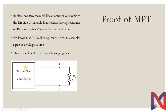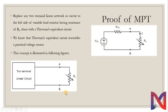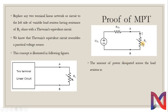Here, you can see any two-terminal linear circuit connected to a load at terminals A and B. It can be represented as a Thevenin equivalent connected to the load. Any two-terminal linear circuit can be represented in its Thevenin or Norton equivalent form. Here, we are considering the Thevenin equivalent form. The amount of power dissipated across the load resistor is P = I² × R_L.